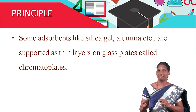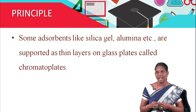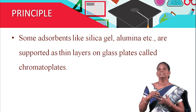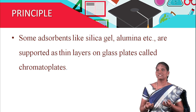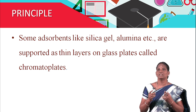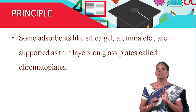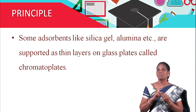What is the principle of thin layer chromatography? Adsorbents like silica gel and alumina are supported as thin layers on glass plates. The moving substances are attracted by the polar sites on the surface of the adsorbent by electrostatic forces. There is a threefold interaction: between the solvent and the adsorbent, the solvent and the compound, and the compound and the adsorbent.